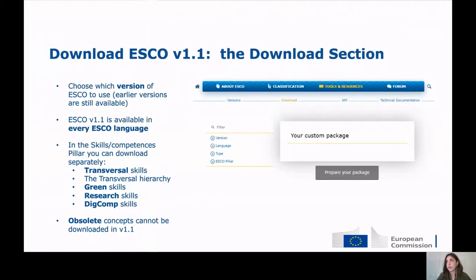The next topic is how to download the ESCO v1.1 classification. You can download it using what is available in the download section, or you can use our API. For the API, please refer to the API page where you will find the documentation you need. In the download section, we allow implementers to download ESCO in different formats — you can choose the format you prefer in the type field. You can also choose different versions of the ESCO classification in the version field, starting with ESCO v1.0. The next major update is ESCO v1.1, which we are presenting now.